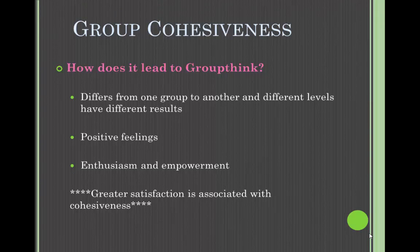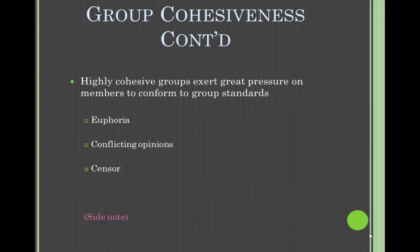First, let's talk about group cohesiveness and how it leads to groupthink. It differs from one group to another, and different levels have different results. It can lead to positive feelings about the group experience and other group members. Highly cohesive groups may be more enthusiastic and feel empowered to take on additional tasks — greater satisfaction is associated with increased cohesiveness. However, highly cohesive groups will exert great pressure on members to conform to group standards. The euphoria can stifle opinions and alternatives, there is an unwillingness to express conflicting opinions, and group members tend to censor their own comments.